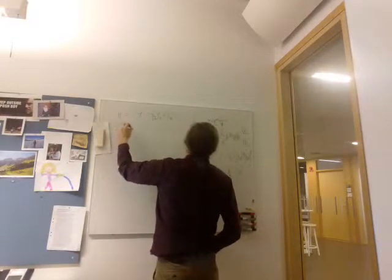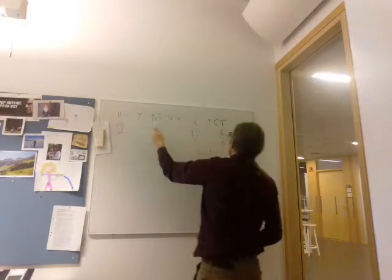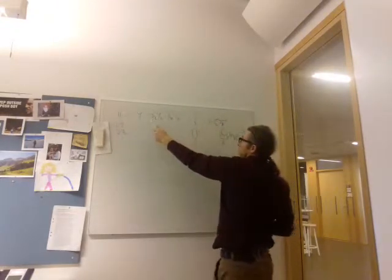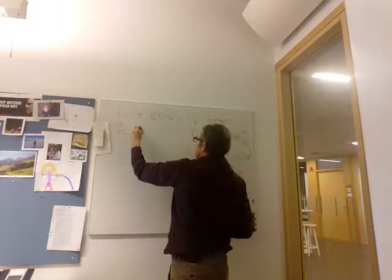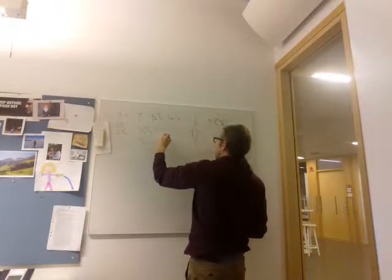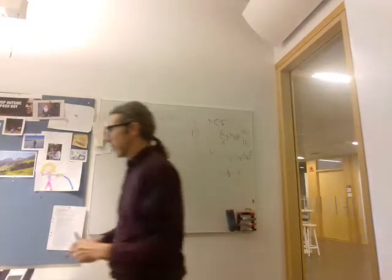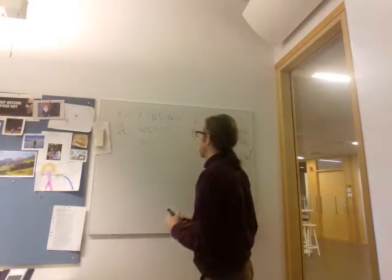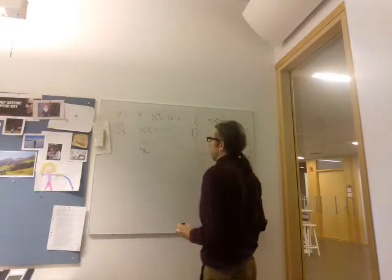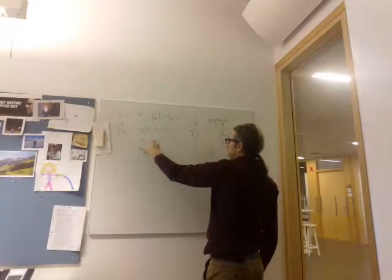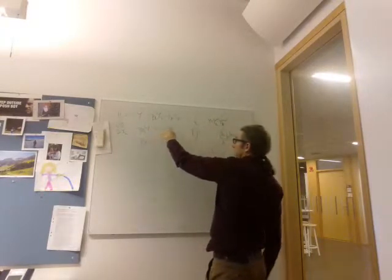So the first order condition in YL gives us alpha Y over YL equals PL. So PL YL is alpha Y. By symmetry, PR YR is 1 minus alpha Y, and my pen's running out. So what are the shares in total product? So those are the shares in total product. PL YL is alpha Y, PR YR is 1 minus alpha Y. That's actually the answer. Relative shares are then alpha over 1 minus alpha.